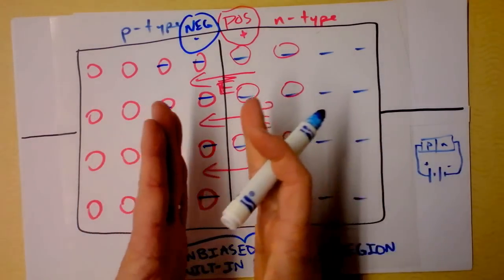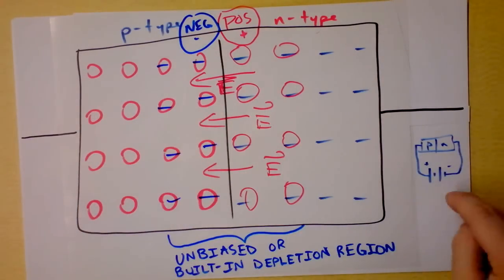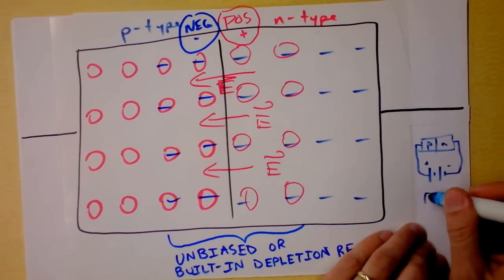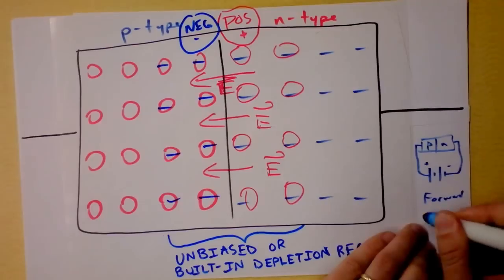And what it will do is it will shrink the depletion region. So this is called a forward bias when it's connected like this. And I'll show you what happens.